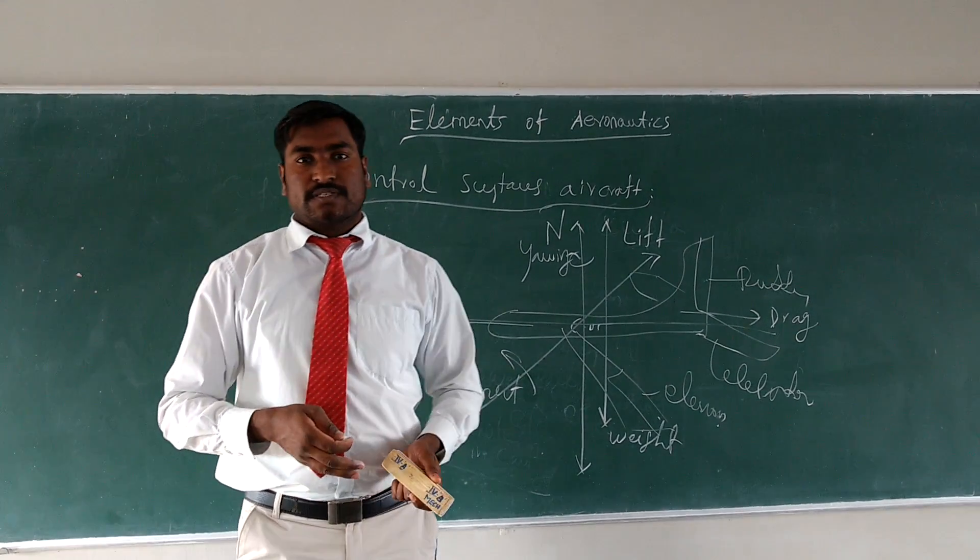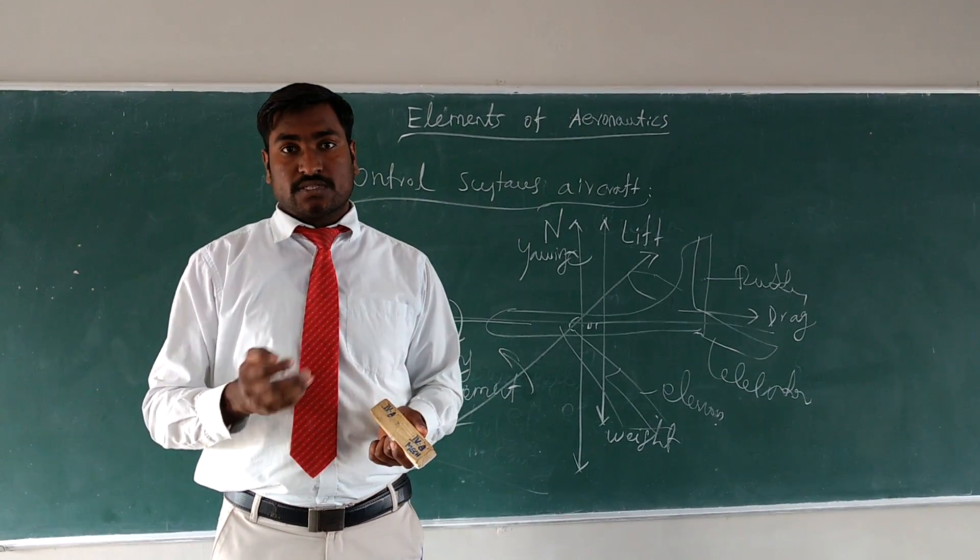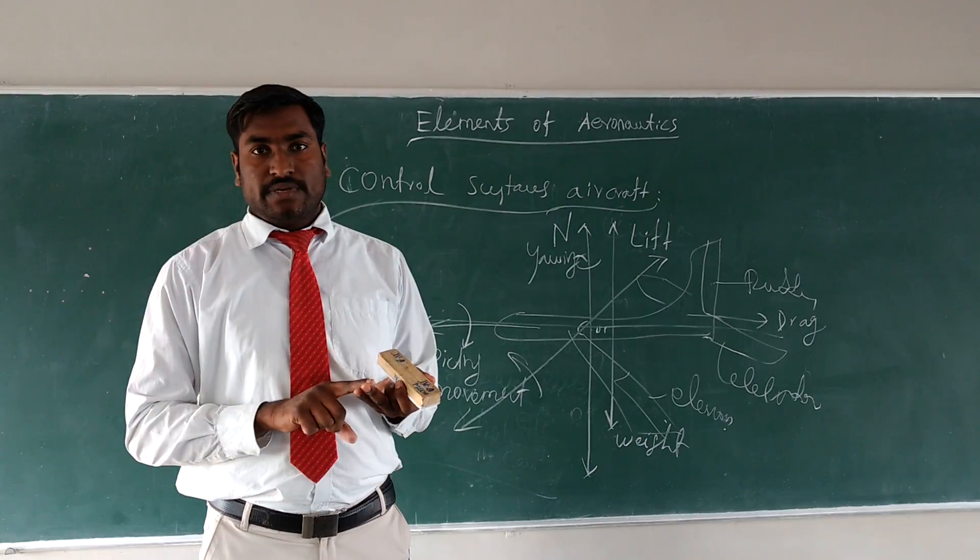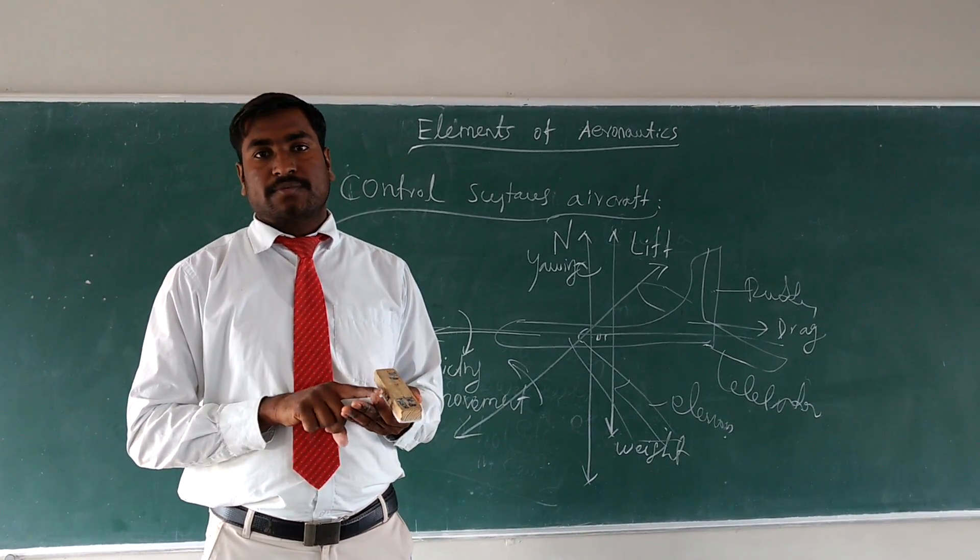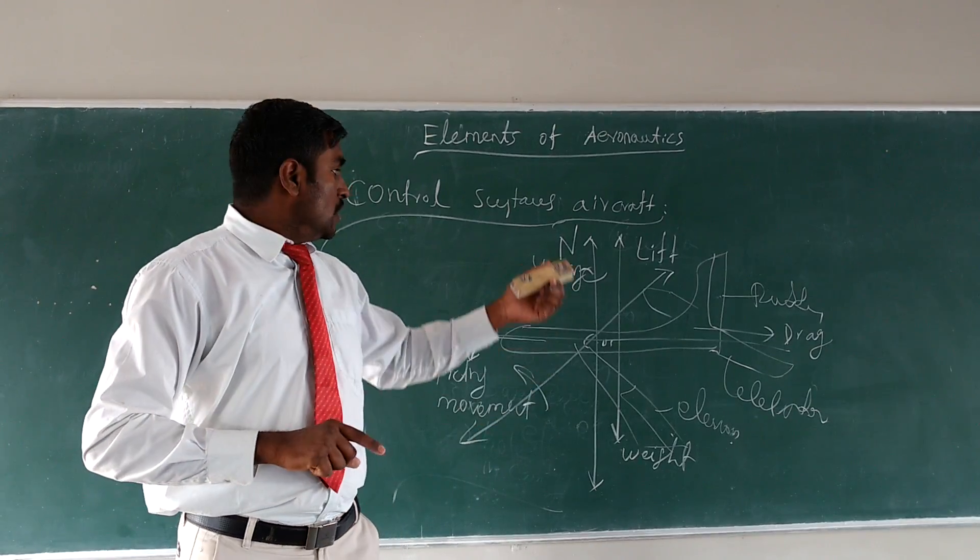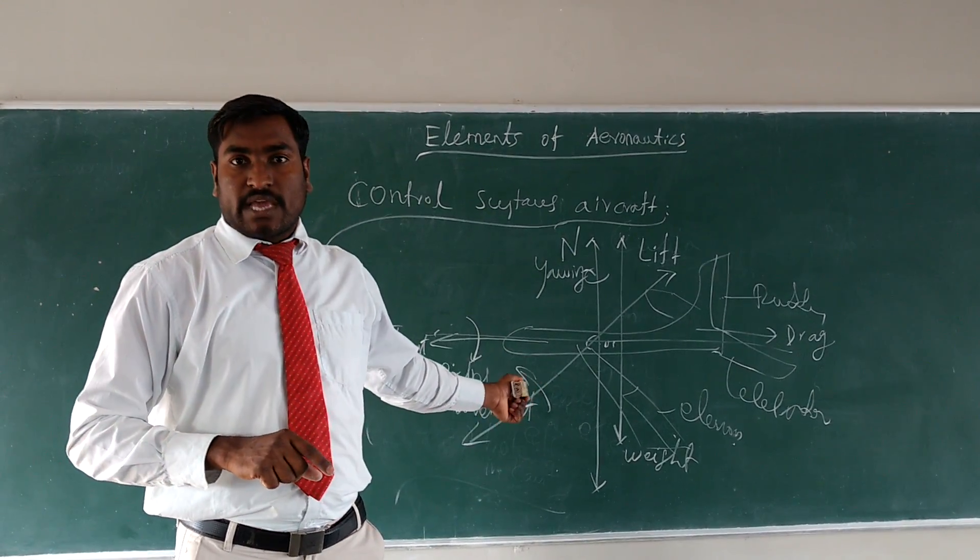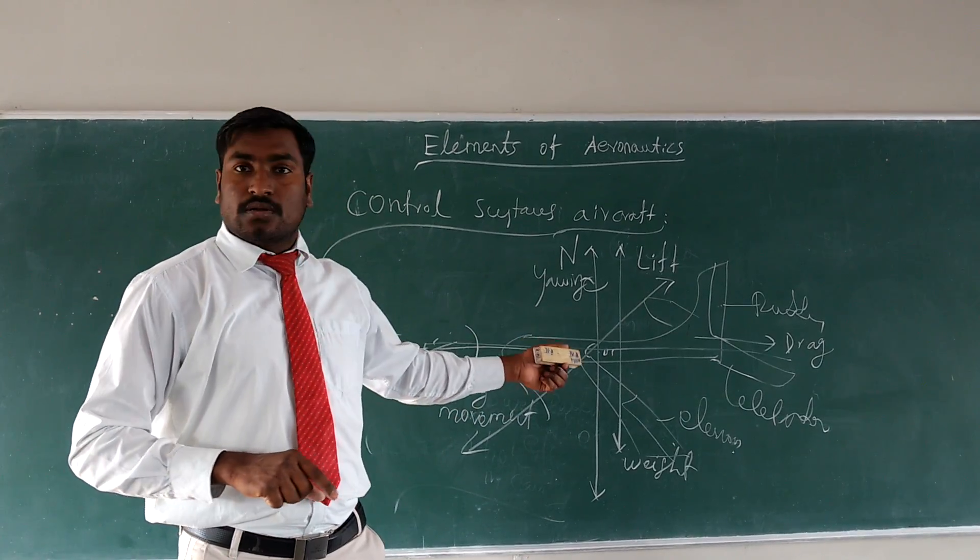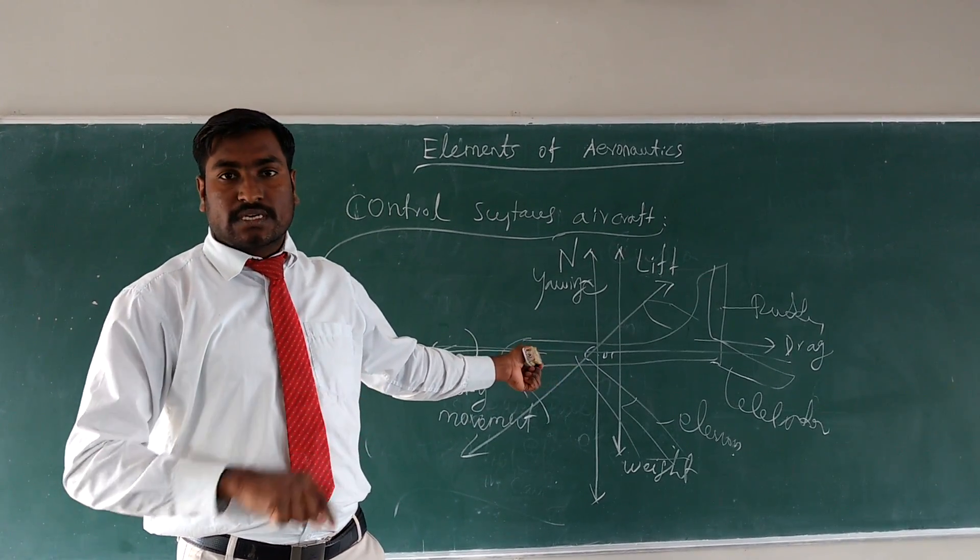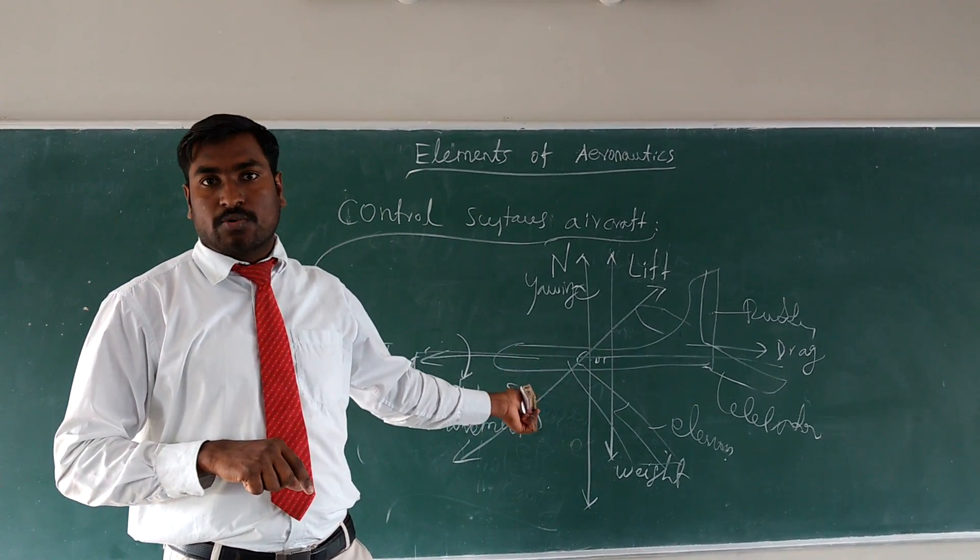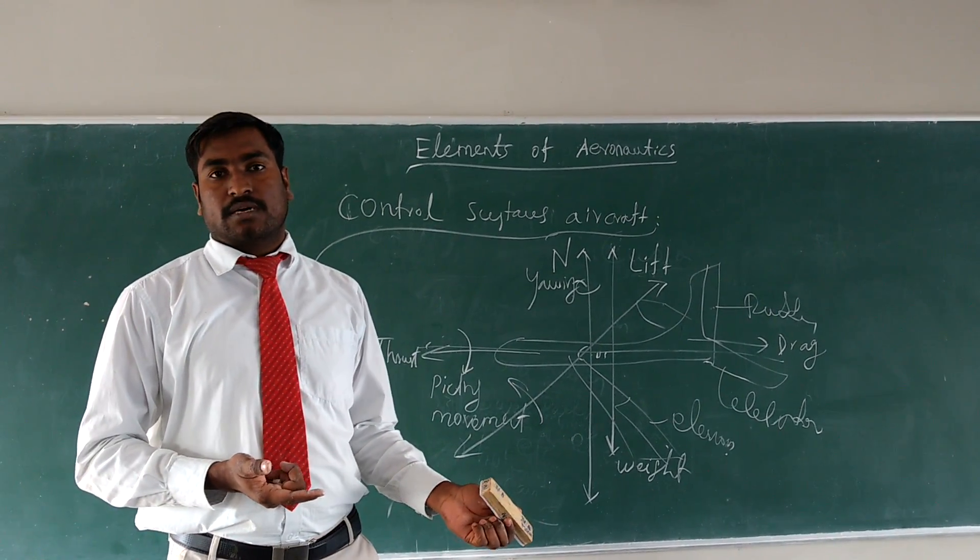So the horizontal surfaces here include rudder, elevator, aileron, and flaps. These are all the horizontal surfaces. Instead of that, yawing acts on normal axis. Normal axis for yawing movement, horizontal axis for pitching movement, vertical axis for rolling movement.